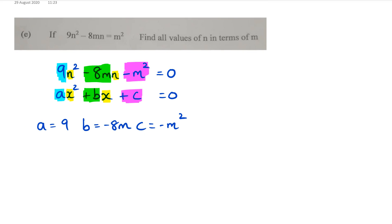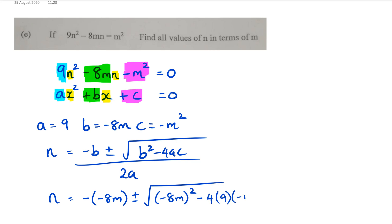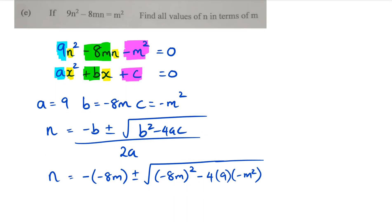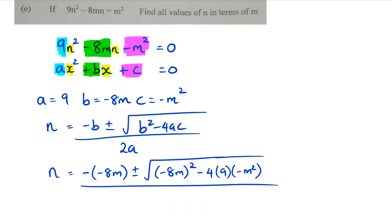Once we've got this, now we're going to use the quadratic formula: x equals minus b plus or minus the square root of b² minus 4ac over 2a. The thing is we're not trying to figure out x, I'm going to replace it with n. So n equals minus b, which is negative of negative 8m, plus or minus square root of negative 8m squared.